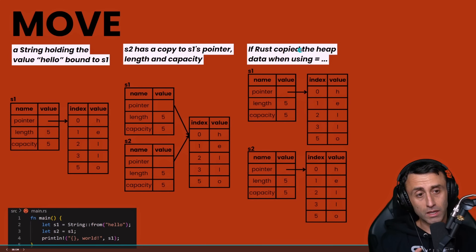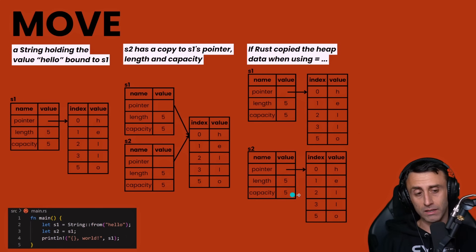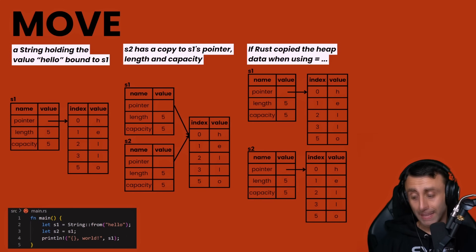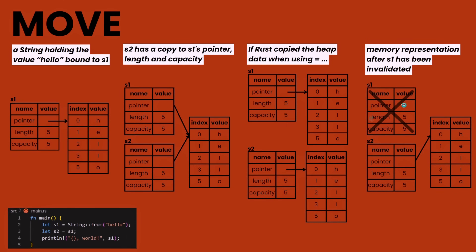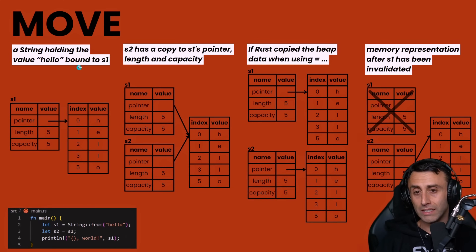You might also think a whole new deep copy was made with the equal sign — a new s2 with all the heap data duplicated — but this is also not what happened. What really happens with the equal sign is this: we move the reference to s2, and s1 is now invalid. This is super important: when we do let s2 = s1 for a type stored on the heap, this is what happens, and this is why we get that error. This behavior is called the move trait.